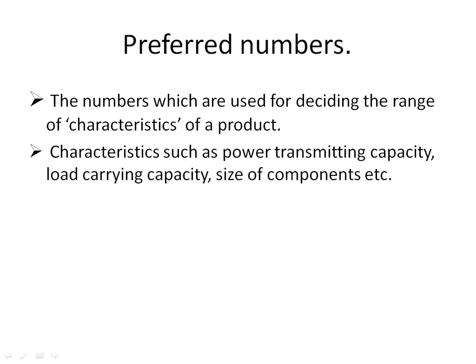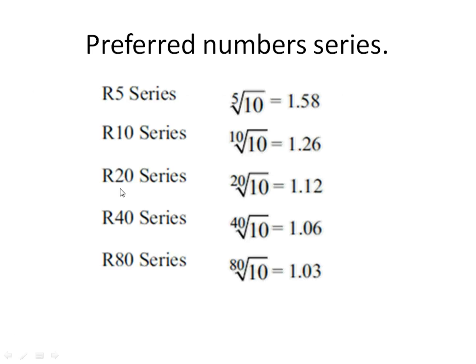Now we will see how the company varies their sizes. The company uses some preferred number series indicated by R5, R10, R20, R40, and R80. The amount of change if a company is using R5 series is the 5th root of 10. The amount of change in the characteristic that a company can make is up to 50%. If a company is using R10 series, that is 10th root of 10, then the company can vary the characteristic of the product up to 26%.